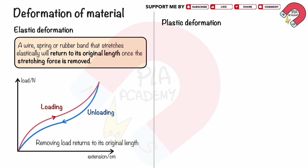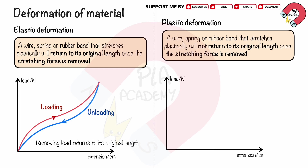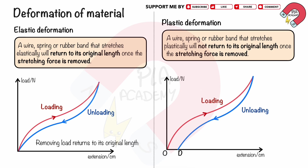Plastic deformation: a wire, spring or rubber band that stretches plastically will not return to its original length once the stretching force is removed. When unloading, the graph shows a different path. This shows that the material does not return to the original length when the load is removed — it produces a permanent extension OD. This is called plastic deformation.